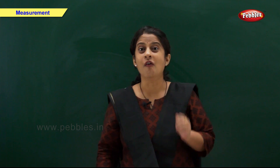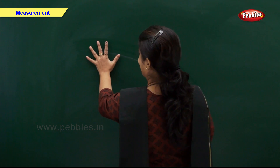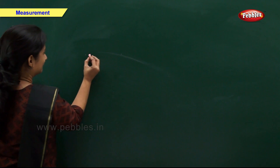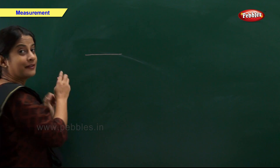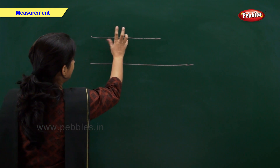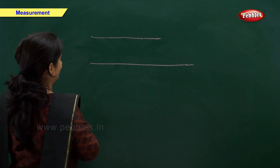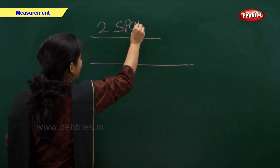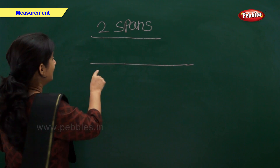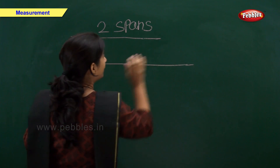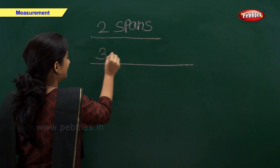Now let us measure the length of my span. This is the length of my span. Now let us measure the length of these lines. One, two — two spans. Now let us measure this line. One, two, three — three spans.